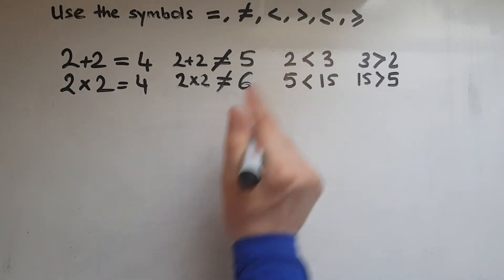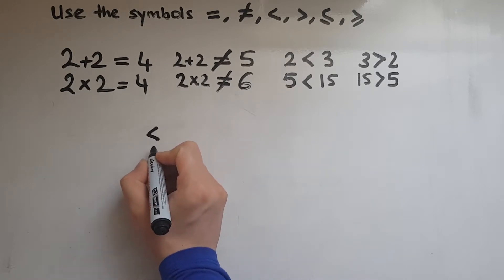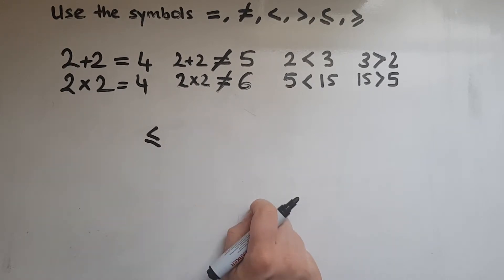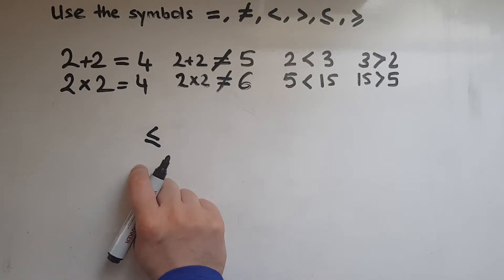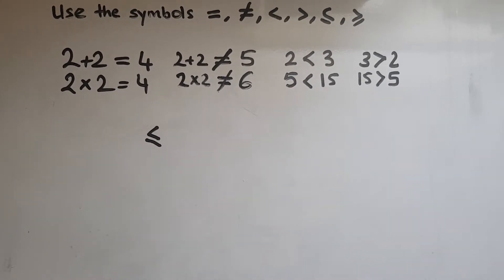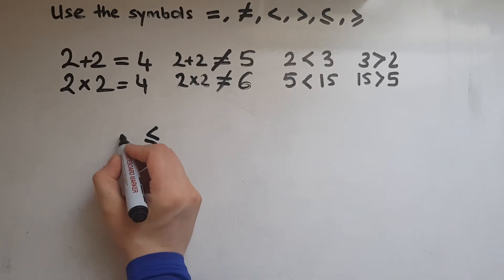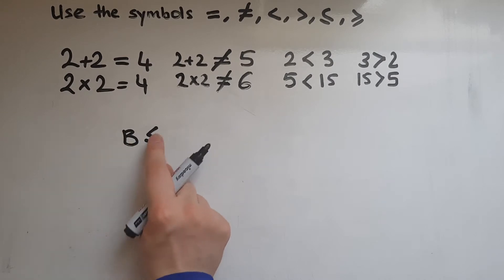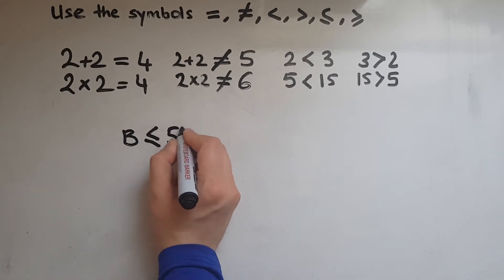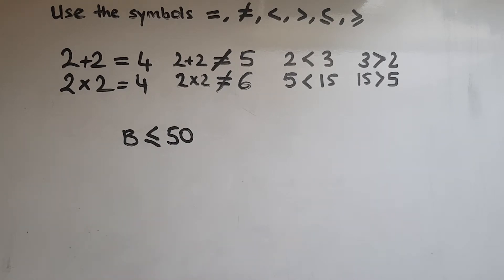Now this symbol reads smaller than or equal to. So it can be either smaller or equal. An example we could look at is spending when you go shopping. Let's say I go shopping now and I've got a budget of 50 pounds. So my budget is smaller than or equal to 50. Why do I say smaller than? Because I wish I could spend less, but the maximum I can spend is 50.